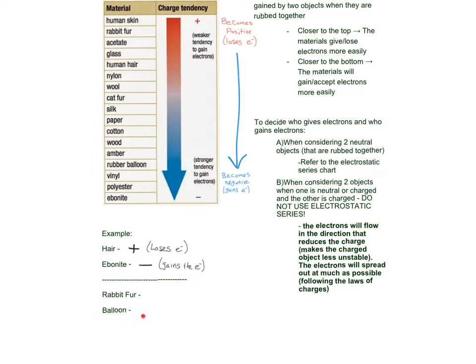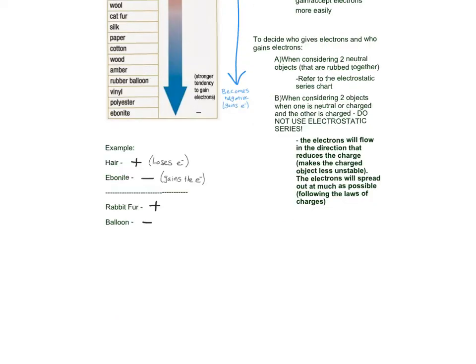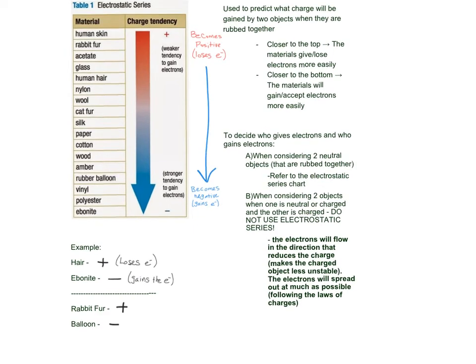We have rabbit fur and a balloon. If we check out rabbit fur, it's right here. And if we compare it to a balloon, balloon's down here. The rabbit fur is on top, which means it's going to become positive. And the balloon is below it, so it's going to become negative. That's the charge of the rabbit fur and balloon.